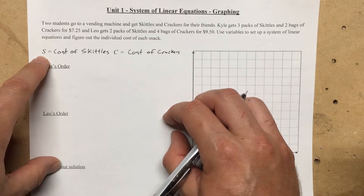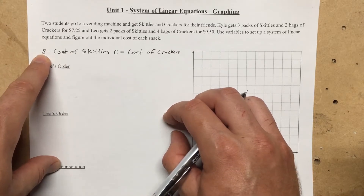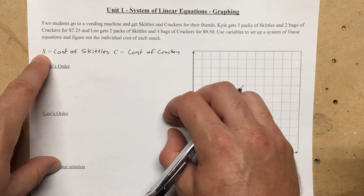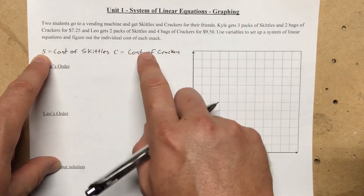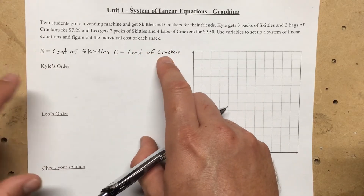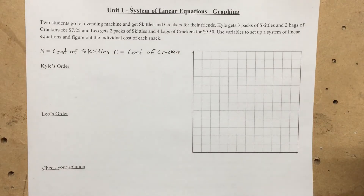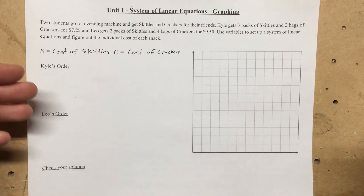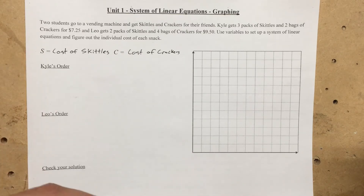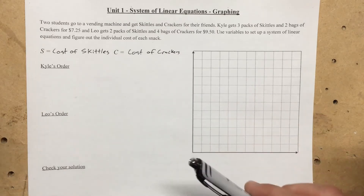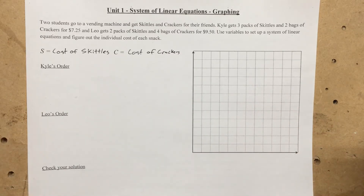Hopefully we are going to solve for the cost of one package of skittles and the cost of one package of crackers. The equation doesn't tell us what each one costs individually. What we need to do is look at each of these orders — Kyle's and Leo's — set up two equations, and graph them in the coordinate plane. Then we find where that intersection point is, and that will be our solution.